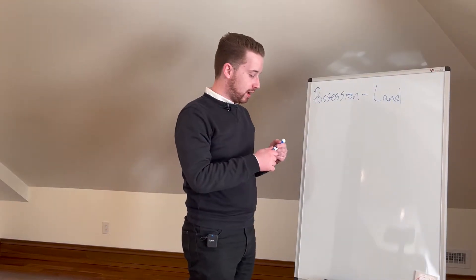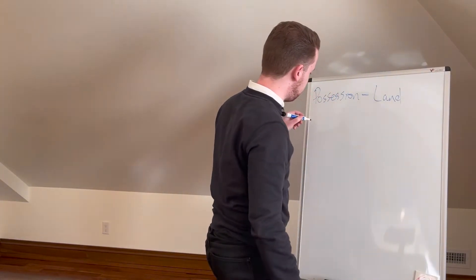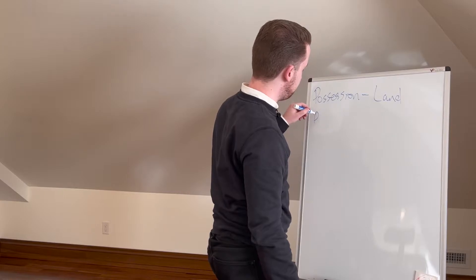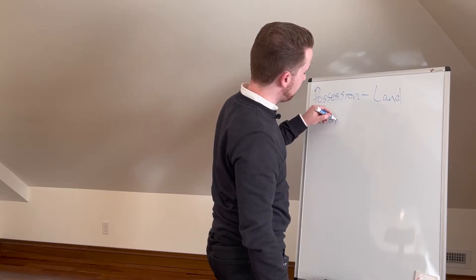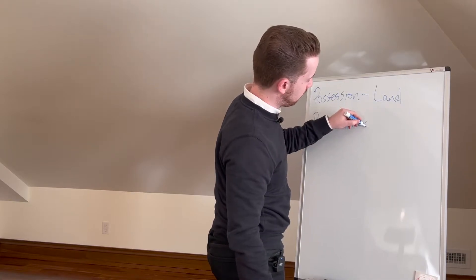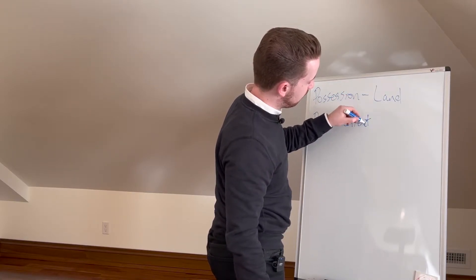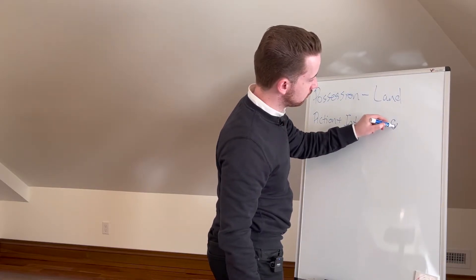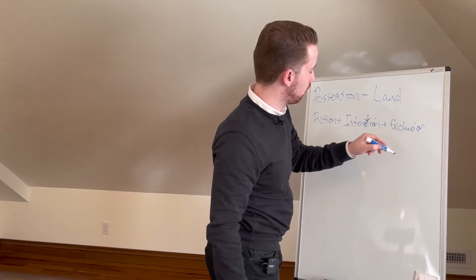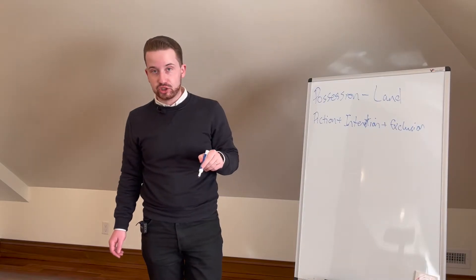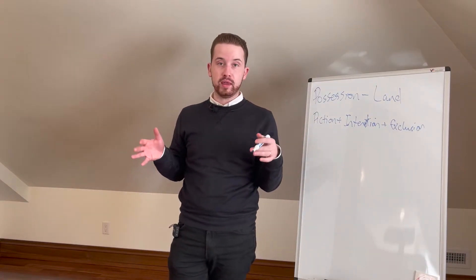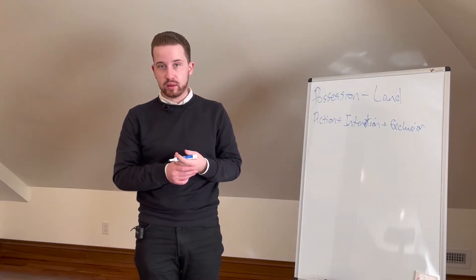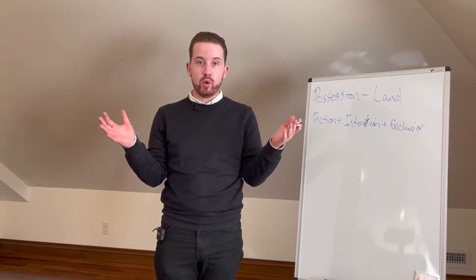Welcome back. In the first capsule we talked about what's necessary to establish possession with respect to land, and we said that requires basically three elements. First, there has to be actual possession — you have to be there and exercise sufficient possession over the land such that it's clear to everyone that you intend to possess it.